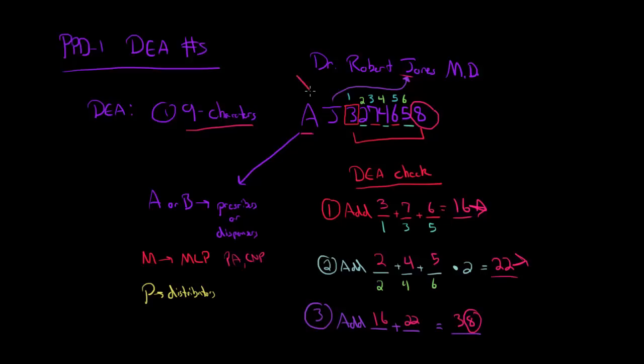Another thing to remember is if you ever see an X here instead of an A, B, M, or P, that some doctors and medications require specific prescribing rights. So some doctors will actually have an X, but they'll also have a normal DEA that starts with an A, B, or M, but they'll also have a separate DEA that starts with an X.